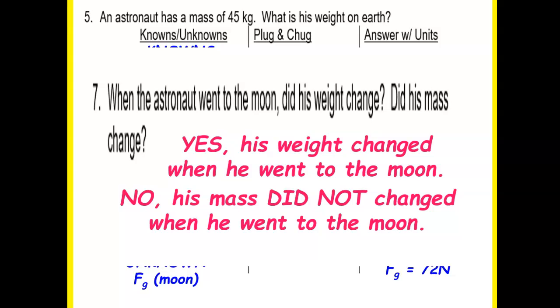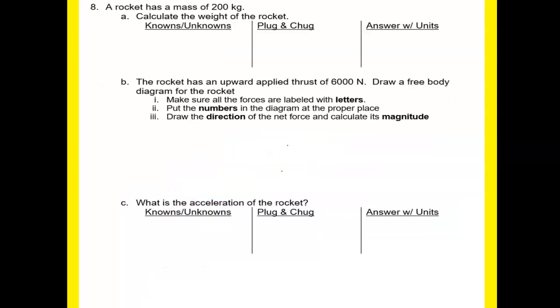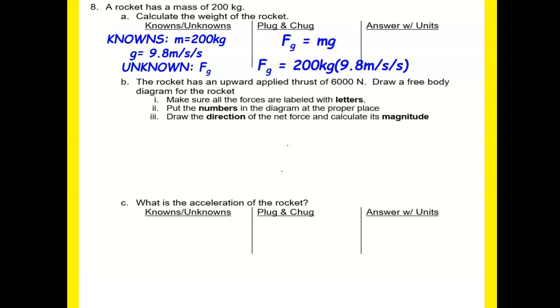All right. Moving on to our finish up our notes. So I have a rocket that has a mass of 200 kilograms. What is the weight? This is weight on Earth. So we have all of our knowns. You have your formula. You plug everything in. So therefore, that is my weight of the rocket.